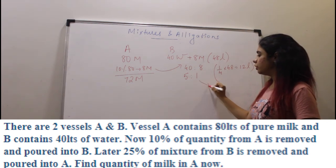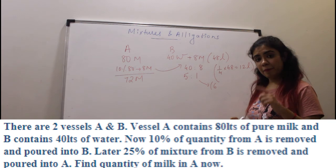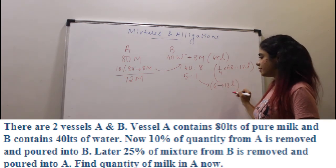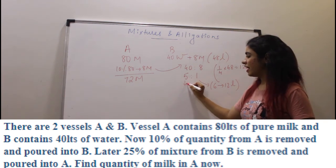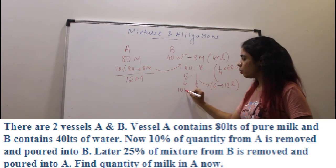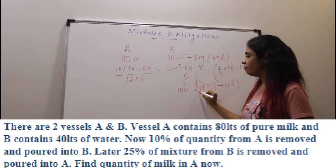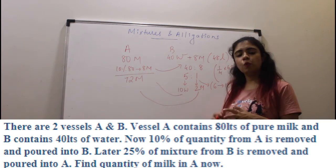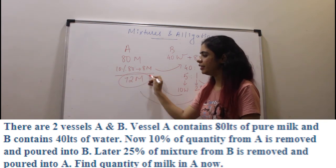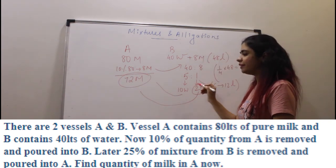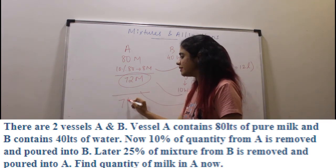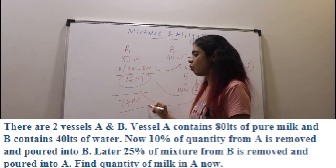The ratio total is 6, but actually 12 litres is removed. So 6 means 12 litres: 5 means 10 litres of water and 1 means 2 litres of milk. So 10 litres of water and 2 litres of milk go into vessel A. Vessel A already had 72 litres of milk, and now we add 2 litres more: 72 plus 2 = 74 litres of milk. That is your answer.